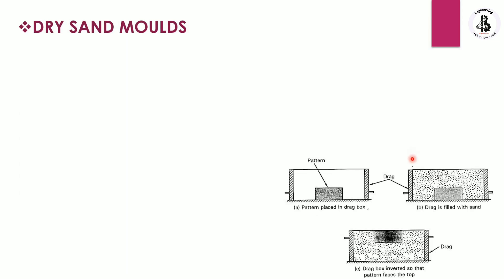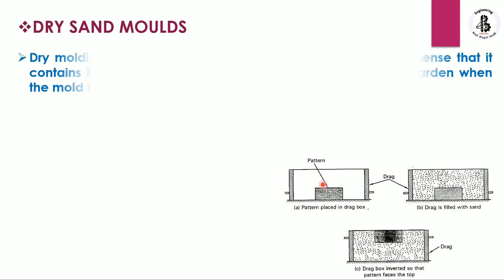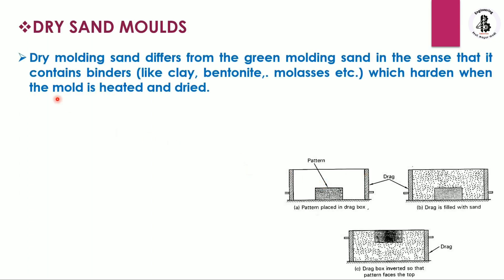Here is the general arrangement for making dry sand molds. Basically, dry molding sands differ from green sand molds because they contain binders like clay, bentonite, and sometimes molasses, which harden when the mold is heated and dried.